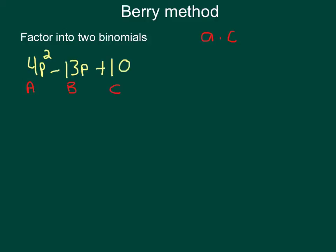So we're going to multiply A times C, which will give us 40. Okay, now that we know that A times C gives us 40, we've got to figure out what two numbers multiply together to give us 40, but add together to give us negative 13. So we've got to sit there and think about that for a second. They multiply together to give us a positive number and add together to give us a negative number. That means they're both going to be negative,